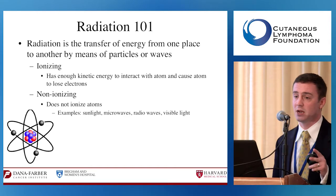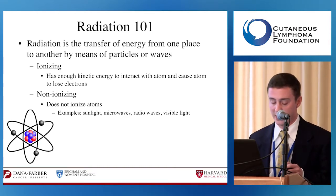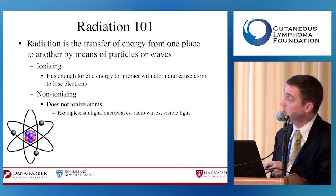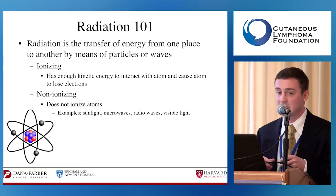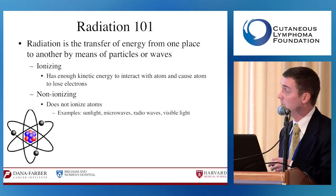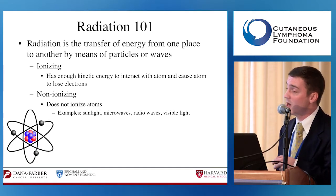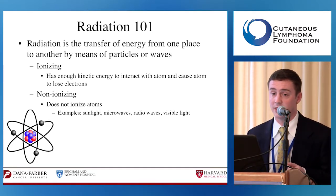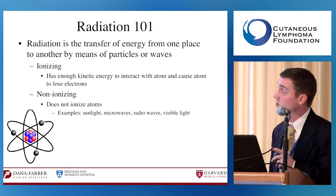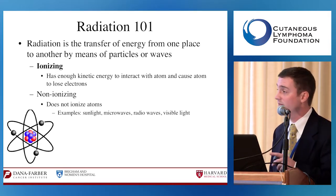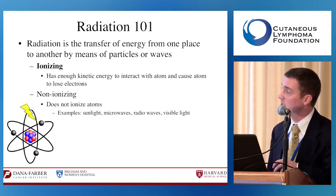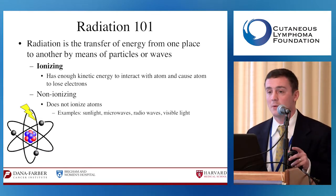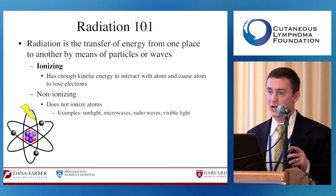We have two main types: ionizing radiation and non-ionizing radiation. Non-ionizing radiation does not have the ability to ionize an atom or excite it to make it lose its electrons. Examples include sunlight and microwaves—things we are in contact with every day. In contrast, ionizing radiation has enough kinetic energy to interact with the atom and cause it to lose its electrons.